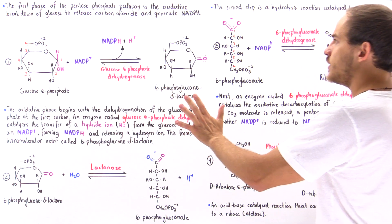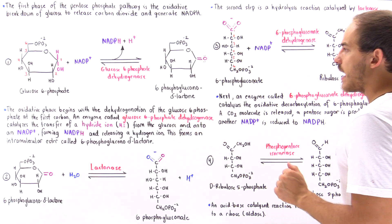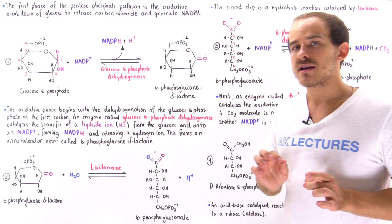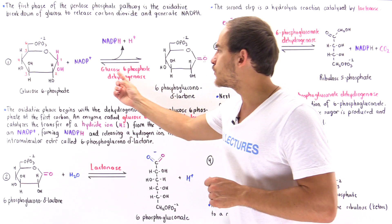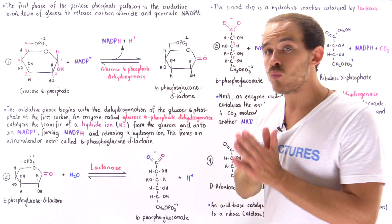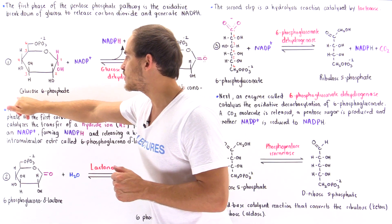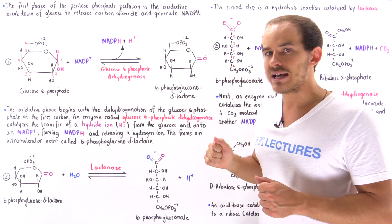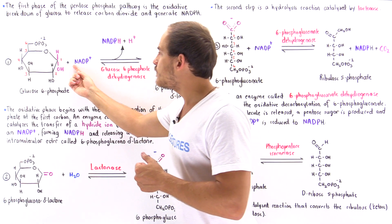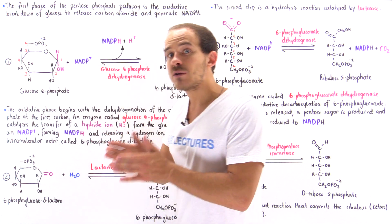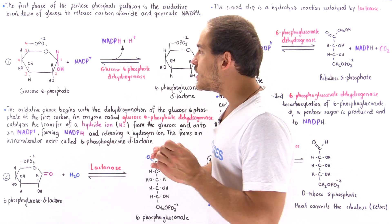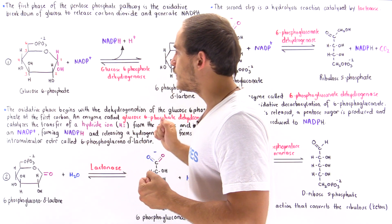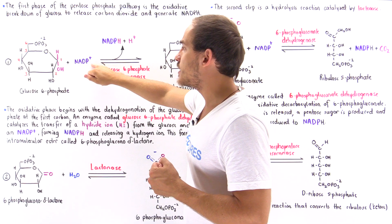We can break down the first phase into four steps. In step one, the enzyme that catalyzes this step is known as glucose-6-phosphate dehydrogenase, because the substrate molecule is glucose-6-phosphate and this is a dehydrogenase reaction. An NADP+ molecule acts as an electron acceptor — we essentially extract two electrons from the glucose-6-phosphate and those two electrons are picked up by this molecule.